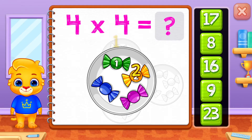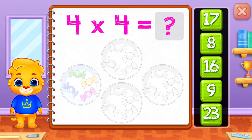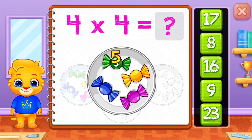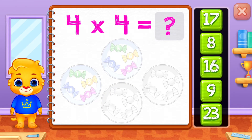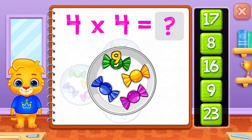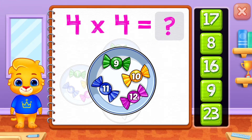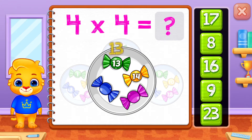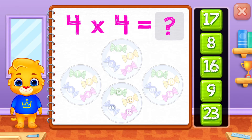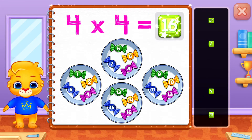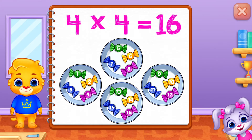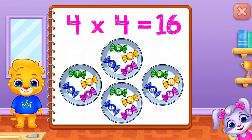1, 2, 3, 4, 5, 6, 7, 8, 9, 10, 11, 12, 13, 14, 15, 16. 4 times 4 equals 16.